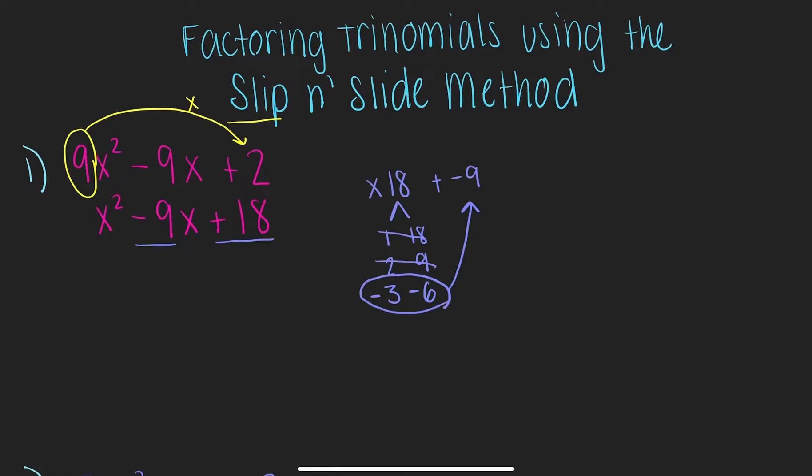They also multiply to be positive 18. Negative 3 times negative 6 is positive 18. So, let's write that in parentheses. x minus 3 times x minus 6.